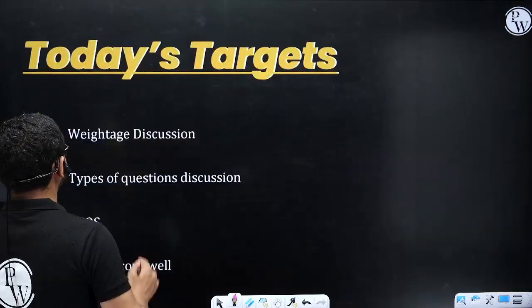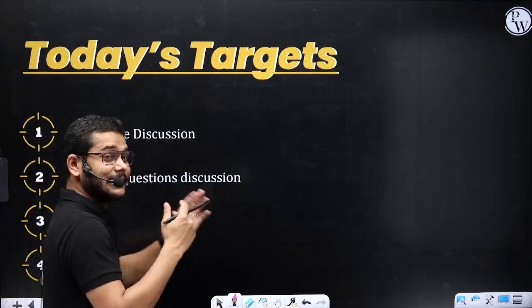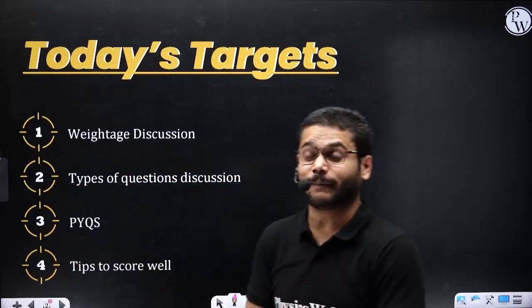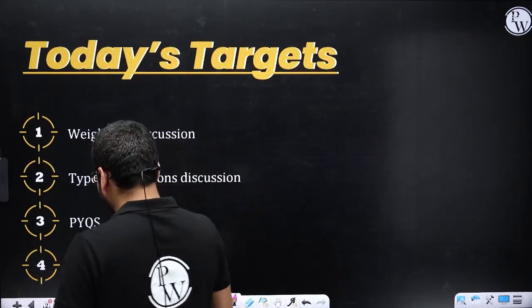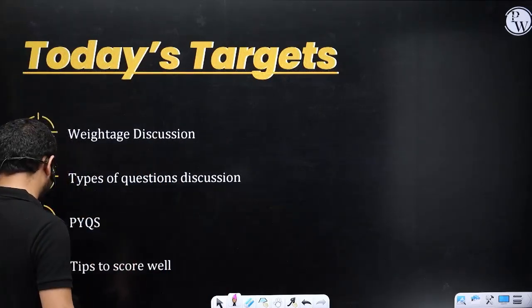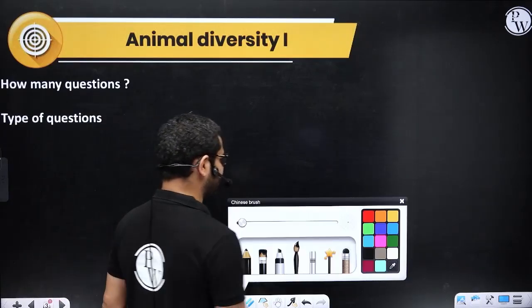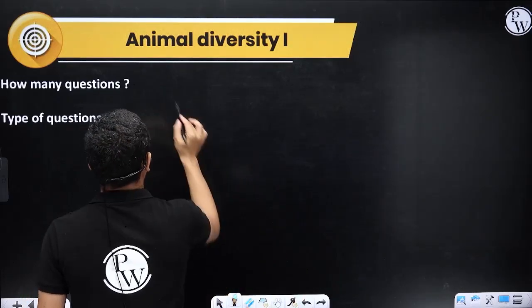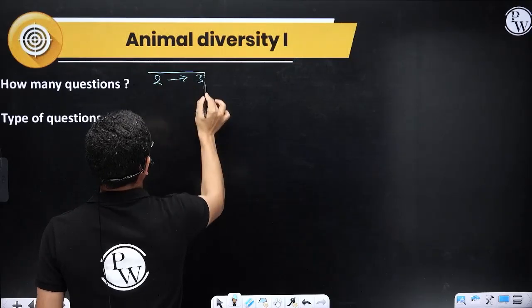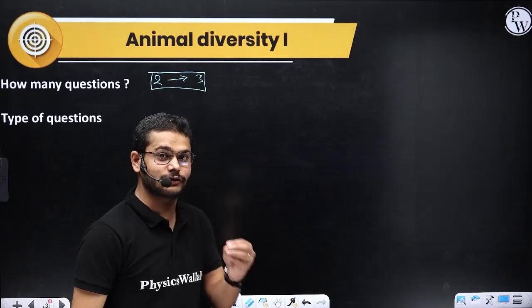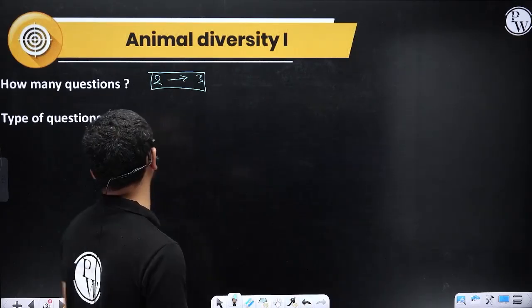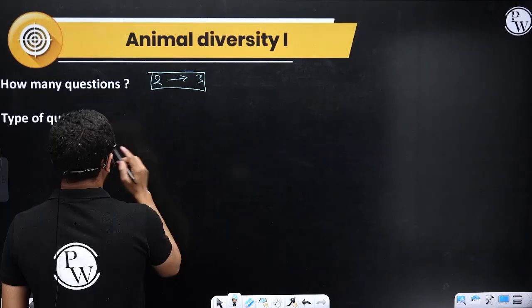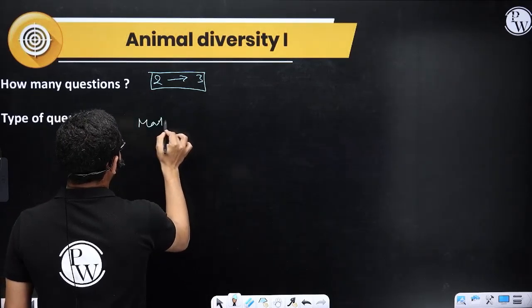Today's topic is the latest discussion. At the same time, I will discuss how to score well, including tips. Like in previous years, questions each year, on an average, two to three questions come from this chapter. Animal Diversity 1 covers invertebrates, so you can expect two to three questions. Let's look at the types of questions from previous years and how to score well. Matching type of questions are good.